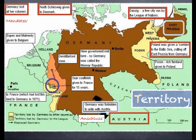The Saar coalfields were to be looked after by the League of Nations for 15 years, until there would be a plebiscite in 1935, where people would vote either to remain independent, to join Germany, or to join France. The products of the Saar coalfield were given to France for those 15 years, but the territory itself was run by the League of Nations.